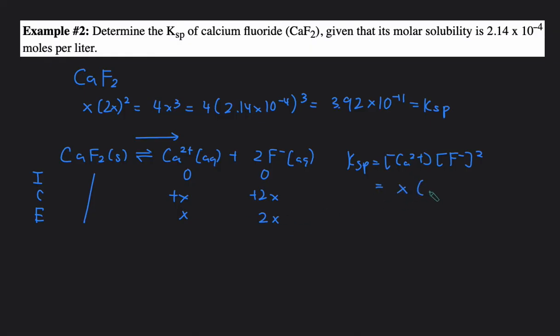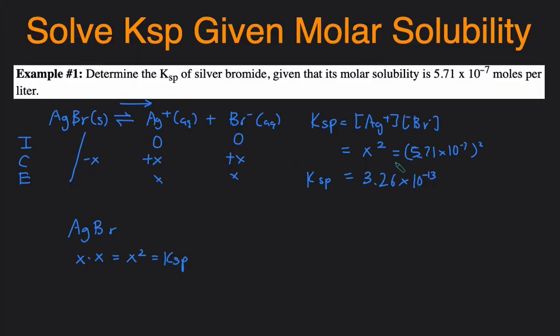Then plug in the variables. Calcium was just X, and fluoride was 2X, and then we square it. So that gives us 4X cubed, and then we can plug in the molar solubility for X, and we'll get this as the same answer, equal to Ksp. And that's how you would do it. That's how you convert the molar solubility to Ksp, the shortcut, and the long way of doing it.